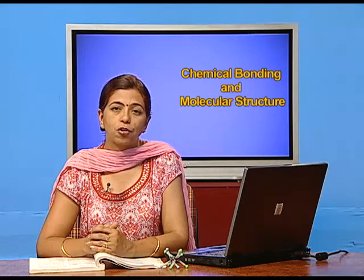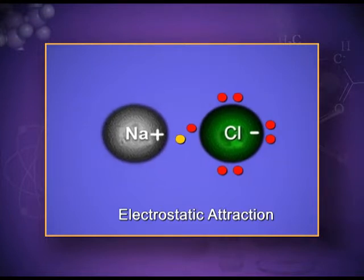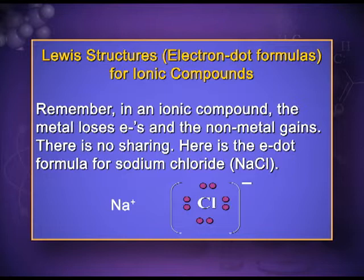Sodium loses one electron and changes into the sodium cation with one positive charge, whereas chlorine gains one electron, completes its octet, and changes into the chloride ion. You can see the transfer of electron from sodium to chlorine, entering them into a more stable state. Since they are now oppositely charged ions, electrostatic force will hold them together. The chlorine is surrounded by eight dots — eight electrons around it — and carries a negative charge because it gained one electron from sodium, while sodium has one positive charge.